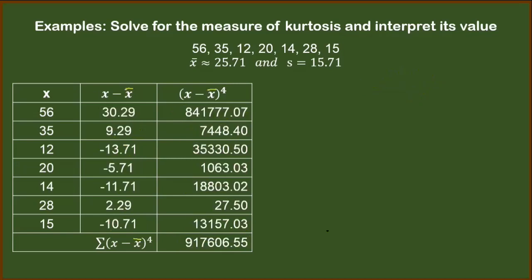Let's just write this more clearly. So once we have arrived with this value, we can now substitute it to our formula for kurtosis. So we have this summation of x minus mean to the fourth all over ns to the fourth.